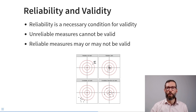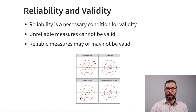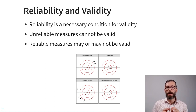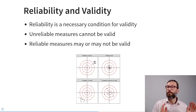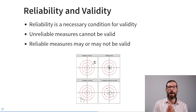In the top right, we see a reliable and valid questionnaire: the items cluster very closely together (reliable) and around the bullseye (valid). In the bottom left, items are dispersed and far from the center — neither reliable nor valid. In the bottom right, items average around the center but each one is quite far away — so it is unreliable and therefore not valid.